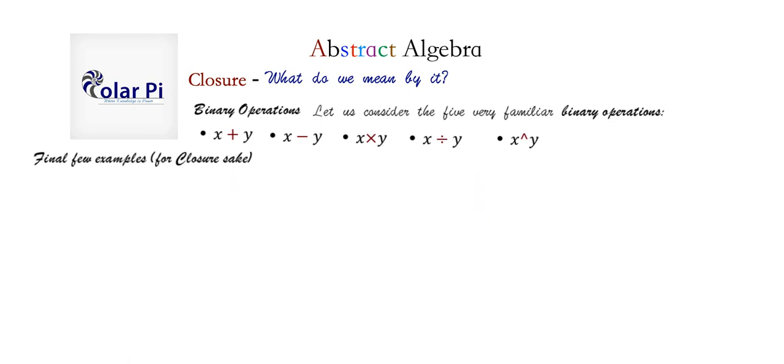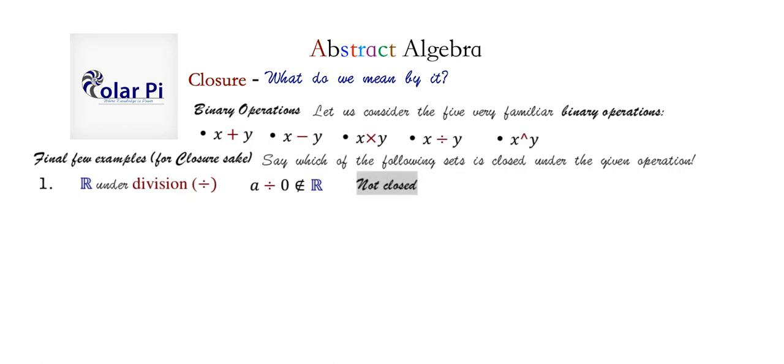And so, as per promise, let's look at the slightly more interesting last examples. So the instruction is say which of the following sets is closed under the given binary operation. First, let's look at R under division. And we quickly see that R under division is not closed because if we take a in R and divide it by 0 in R, then a divided by 0 is not in R.